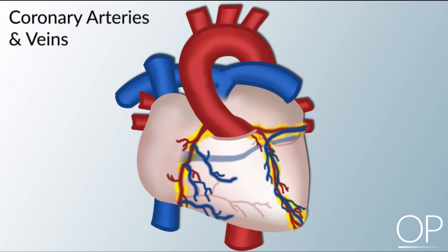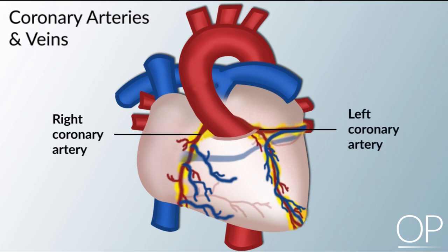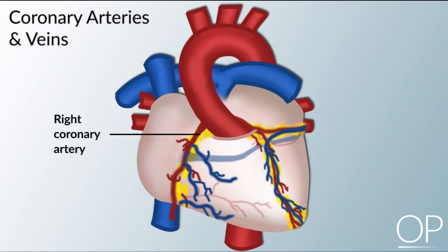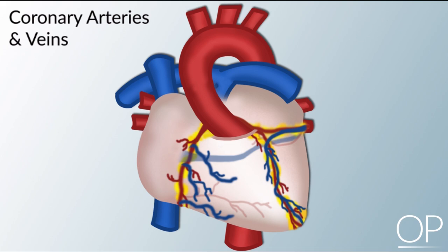The branch of the circulation that supplies oxygen and other nutrients to the cells of the heart is called the coronary circulation. The major coronary arteries are the right coronary artery and the left coronary artery. The left coronary artery originates from a single opening behind the left cusp of the aortic valve and divides into the left anterior descending artery and the circumflex artery. The right coronary artery originates from an opening behind the right cusp of the aortic valve and divides into three major branches.